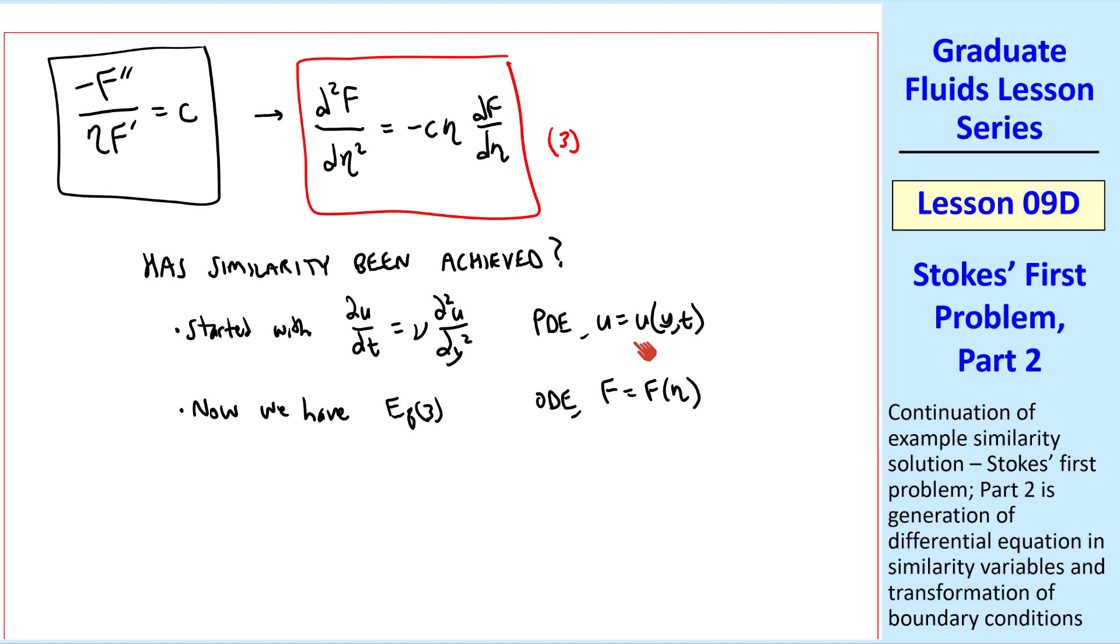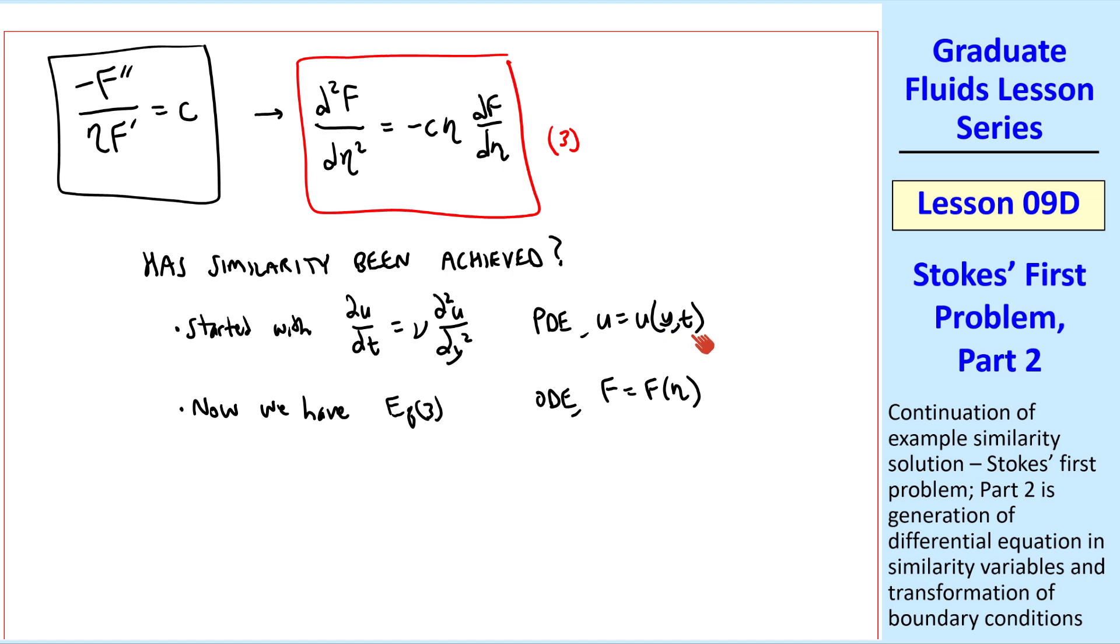So we have reduced the number of independent variables from y and t to eta, or from 2 to 1. So we reduced the number of independent variables by 1, from 2, y and t in physical variables, to 1, eta.